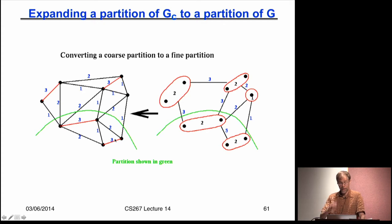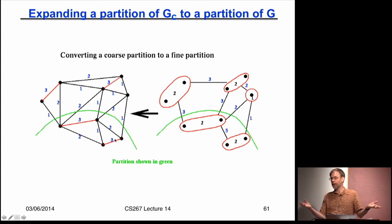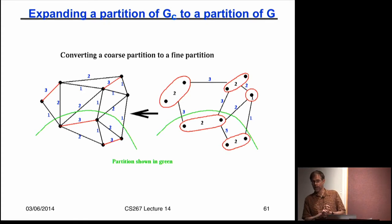Now suppose I have the coarse graph and have recursively figured out how to partition it — divided into nodes above and below a green line. I need to expand that to a partition of the original fine graph. It's pretty obvious: everybody below the green line goes below the green line, and everybody above goes above. That's a simple linear-time operation.